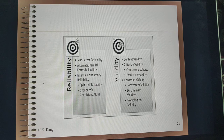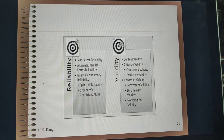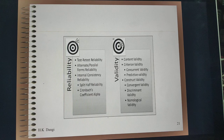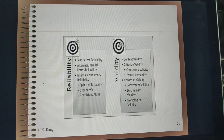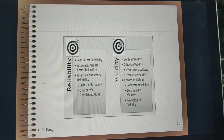For example, if a clock shows 2 o'clock at 2 o'clock and 4 o'clock at 4 o'clock, then it is reliable and valid. But if it shows 4 o'clock at 2 o'clock and 6 o'clock at 4 o'clock, then it is reliable but not valid. If it shows 5 o'clock at 2 o'clock and 7 o'clock at 6 o'clock, then it is neither reliable nor valid. Reliability could be in the form of test-retest, alternate form, or internal consistency.